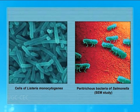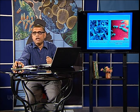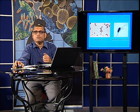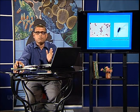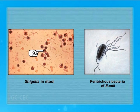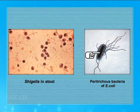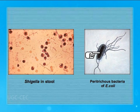Listeria monocytogenes causes Listeriosis, and Salmonella infection causes Salmonellosis, which can invade multiple organs — primarily sourced from the digestive tract or alimentary canal. Shigellosis, another dreadful infection, is caused by Shigella, best detected by Shigella presence in stool samples. E. coli can be of various types — enterohemorrhagic causing intestinal hemorrhage, enterotoxigenic producing toxin, enteropathogenic or enteroaggregative causing traveler's diarrhea or persistent diarrhea, enteroinvasive invading other organs from the intestine, or diffuse — spreading along the entire intestine.